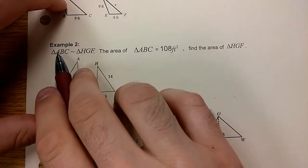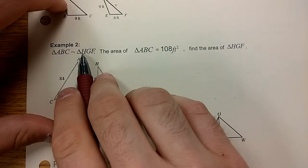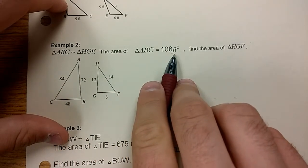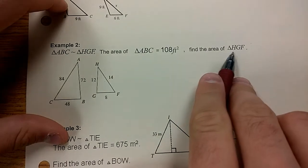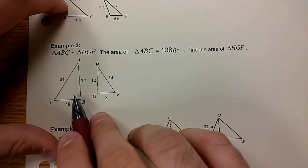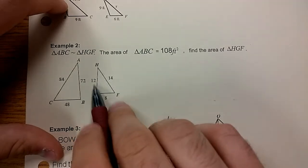In example two, it says triangle ABC is similar to triangle HGF. The area of triangle ABC is 108 square feet. Find the area of triangle HGF. They give you the area of the larger triangle ABC, and they don't know the area of this one. You have to find it.